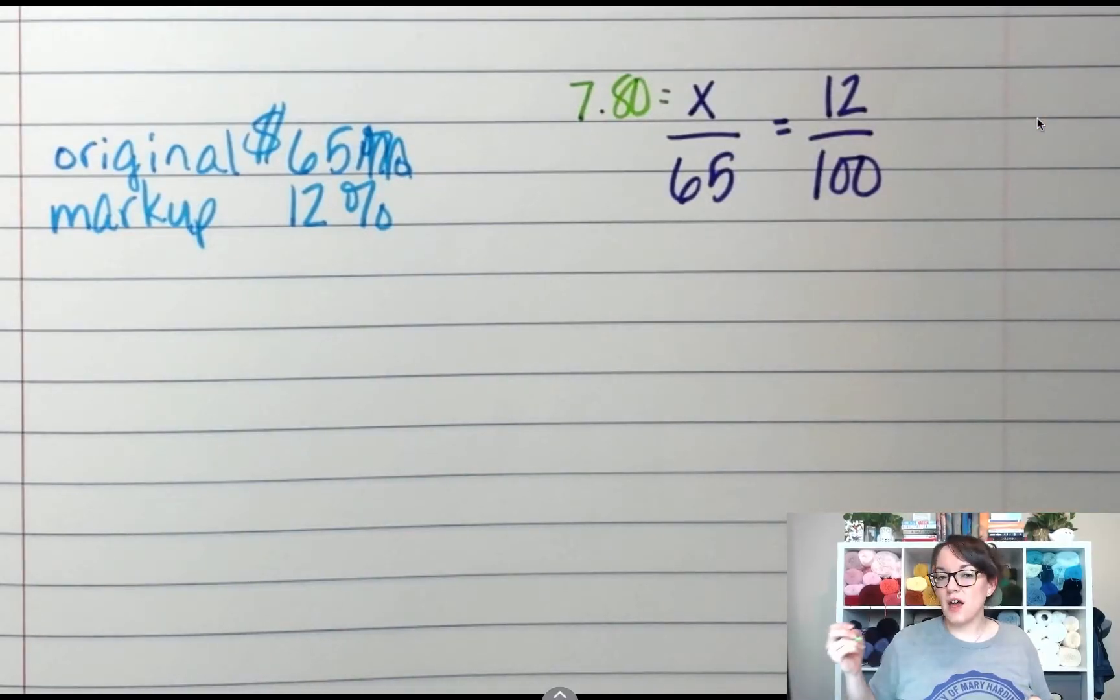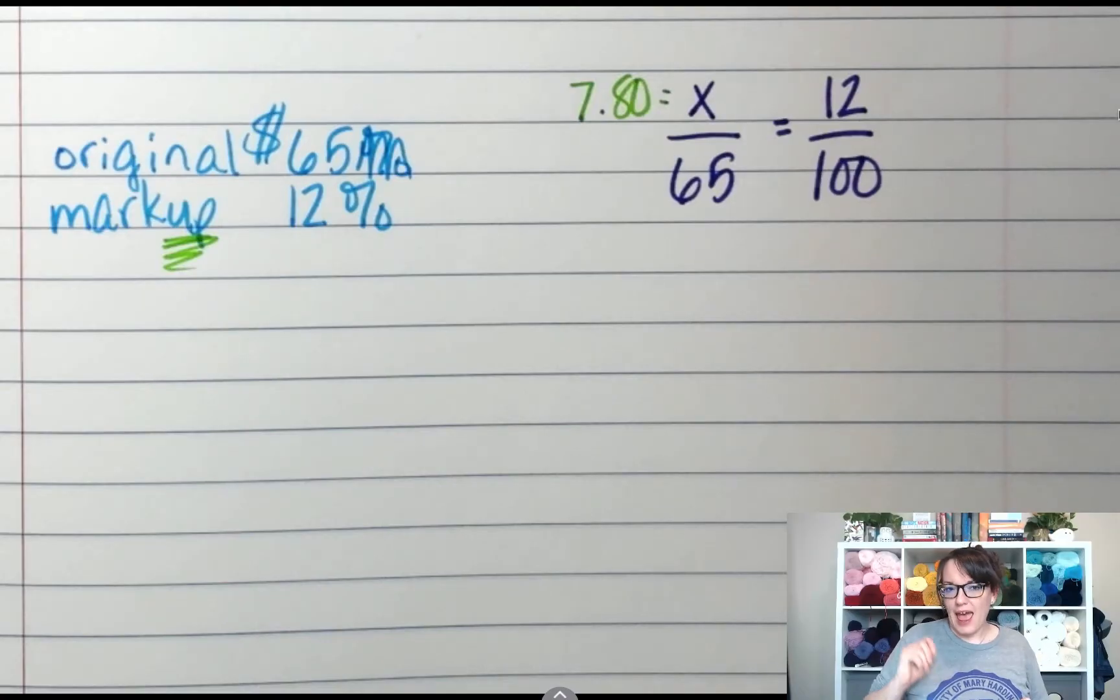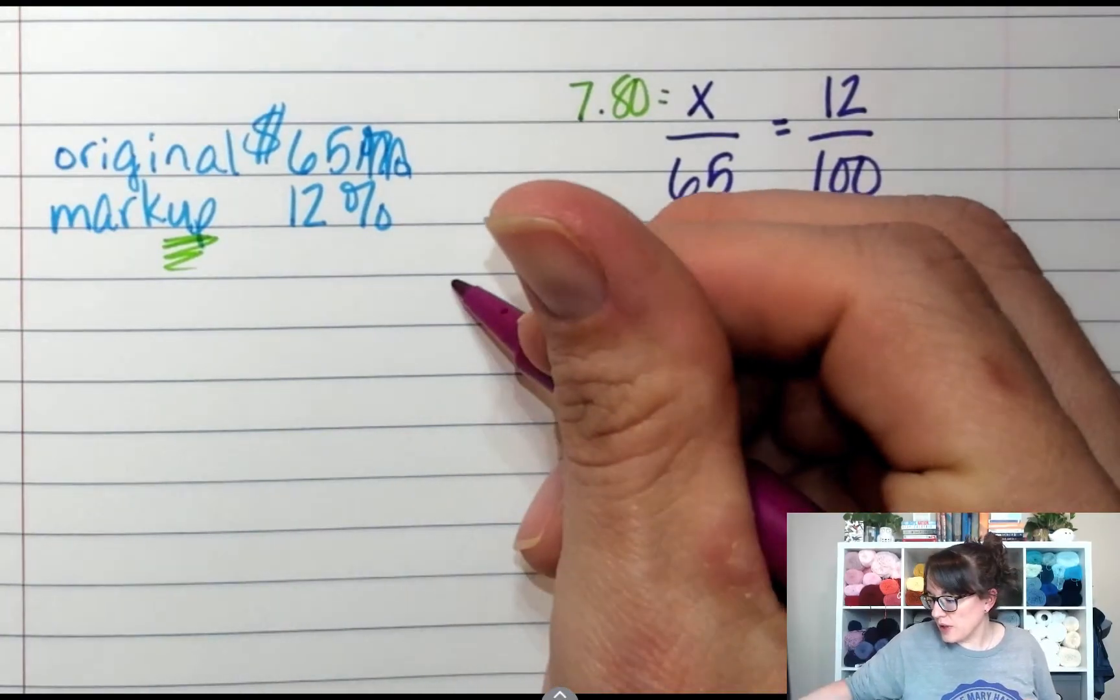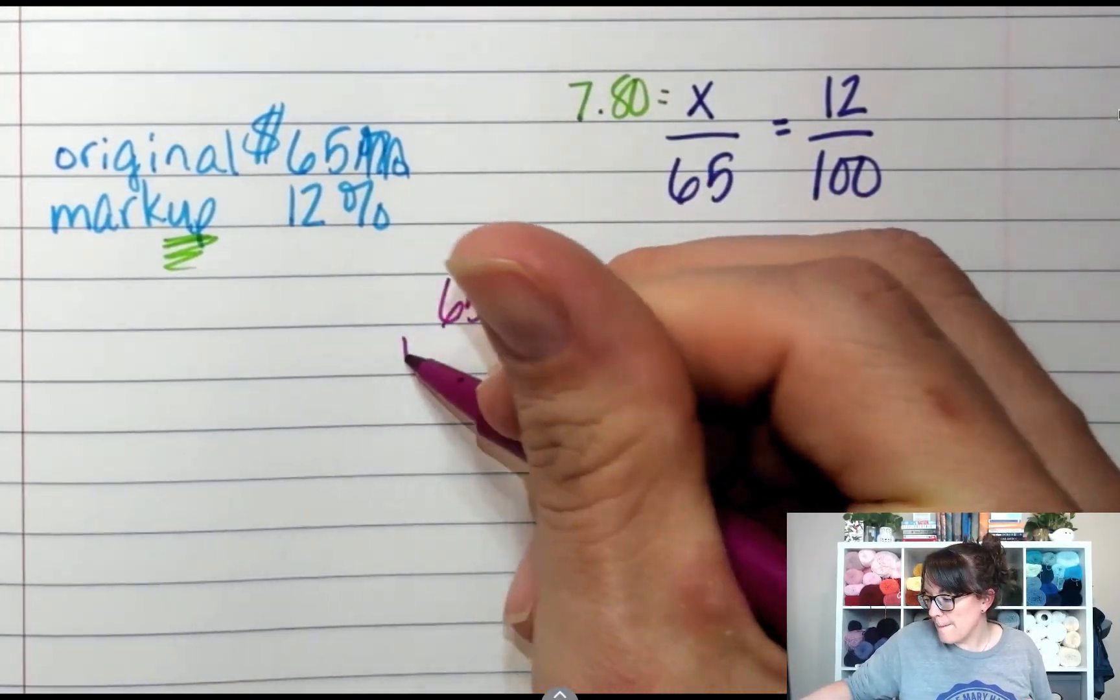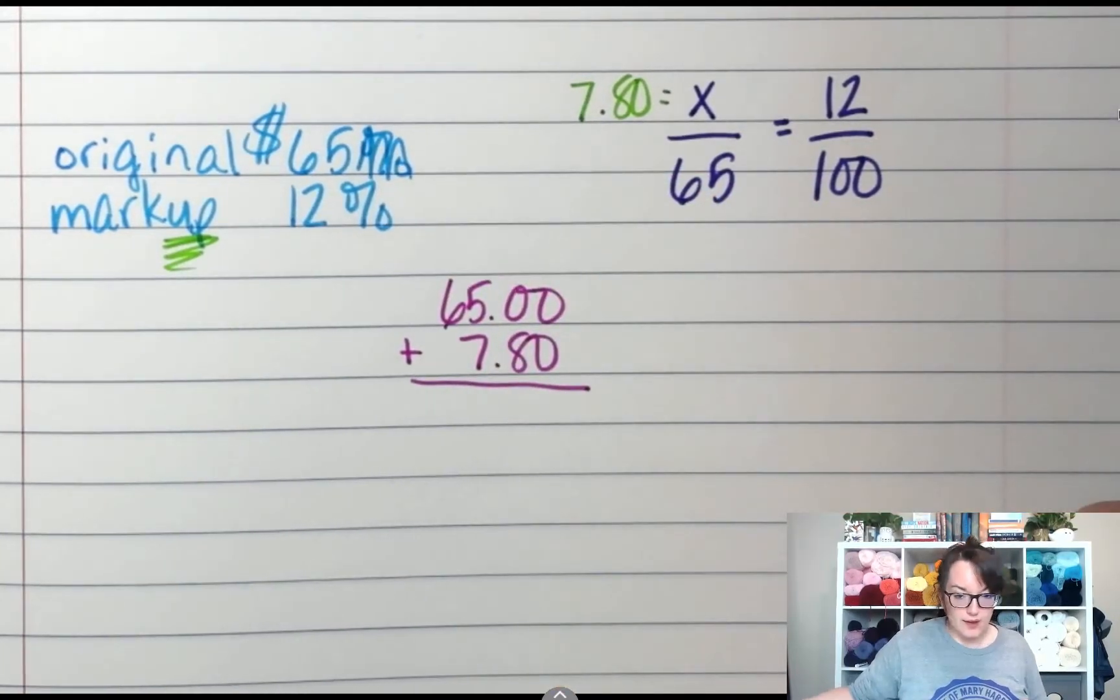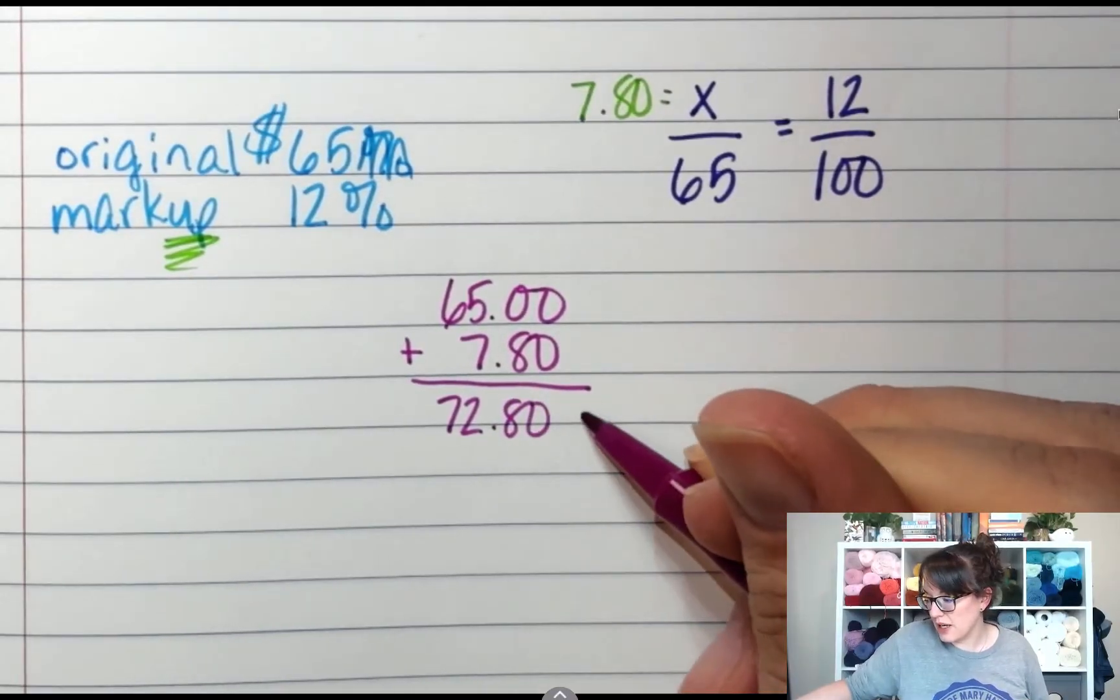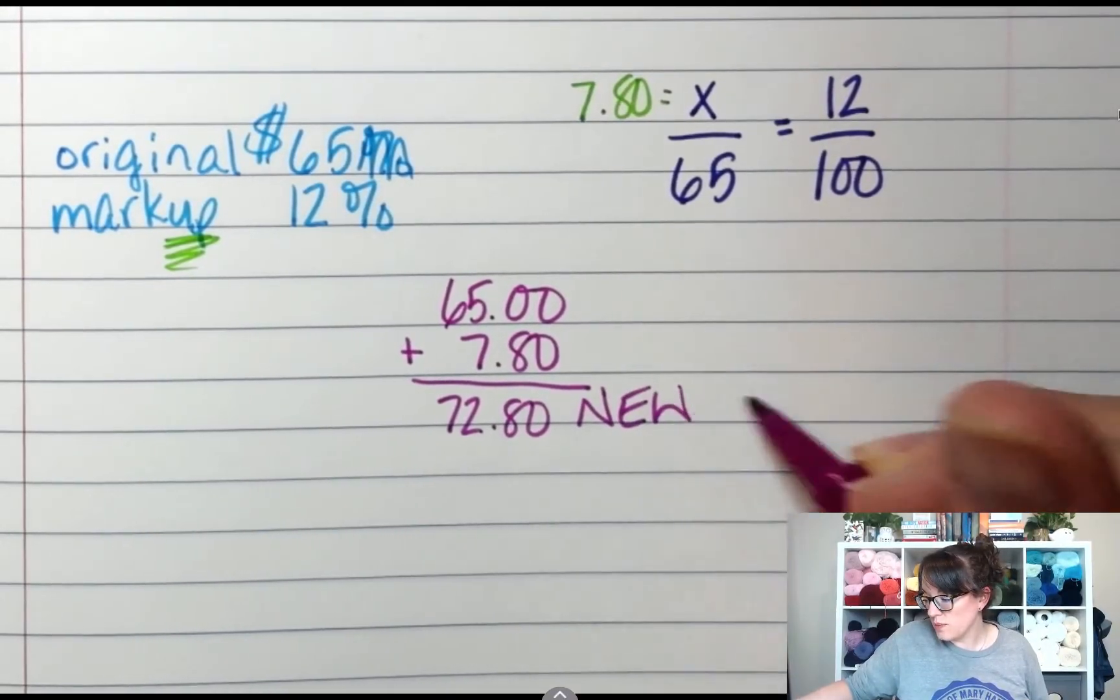But instead of marking down the price, this time I'm going to mark up the price. So what was the original price? And how much am I adding? So to get my answer here, I'm going to do $65.00 plus 780, and I end up with $72.80, which is my new price.